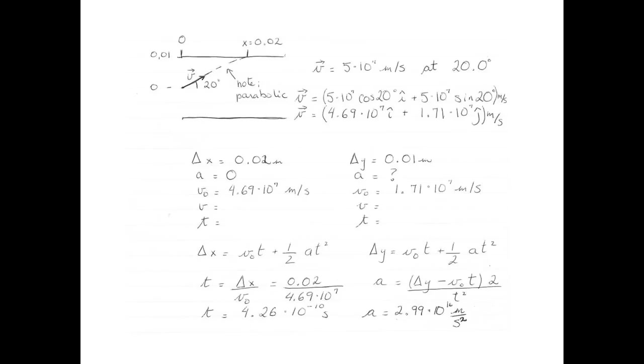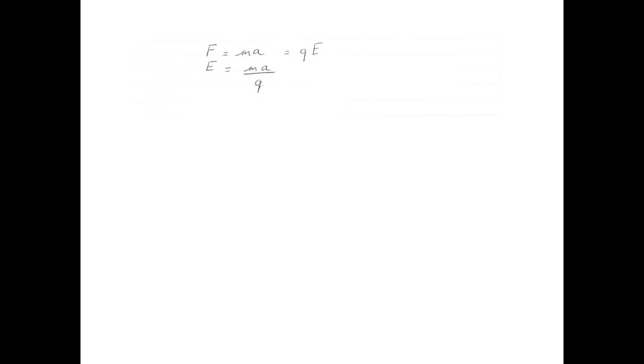Now we have the acceleration. How is this related to the electric field? Newton's second law is still true in electricity and magnetism, so F equals ma, and the force on a charged object is its charge multiplied by the external electric field. Combining these two equations, the electric field is E equals ma over q. Plugging in numbers: 9.1 times 10 to the negative 31 (mass of an electron) multiplied by 2.99 times 10 to the 16, divided by 1.6 times 10 to the negative 19 (charge of an electron), giving us an electric field of 1.7 times 10 to the 5 newtons per coulomb.